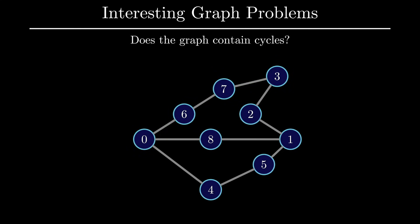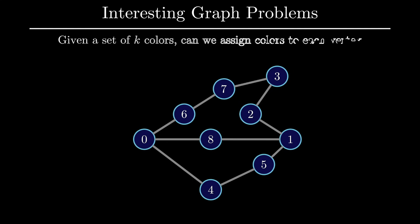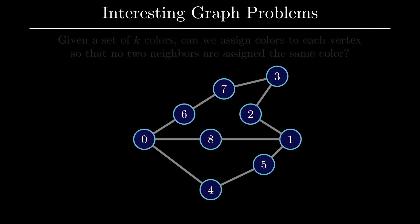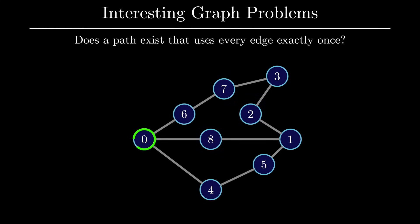Then there is the problem of cycle detection in a graph. Many of the algorithms that are used for connectivity problems can be naturally adapted to solve this problem as well. Another interesting problem in graph theory has to do with vertex coloring, which we actually saw in the Sudoku example. The problem formally stated is: given a set of colors, can we assign a color to each vertex such that no two neighbors are assigned the same color? In this graph, for two colors no such solution exists, but if given three colors, this problem has a solution. Another very interesting problem is whether a path exists that uses every edge exactly once. This graph does indeed have one of these paths, and an efficient algorithm for this problem exists.